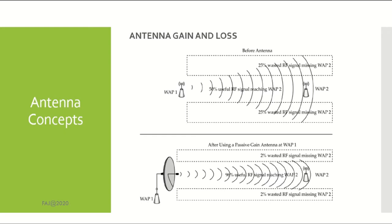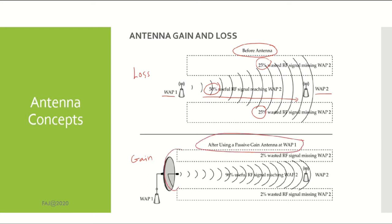Antenna gain and loss. This is an example of antenna loss and this is an example of antenna gain. Before using an antenna, wireless access point 1 tries to transmit an RF signal to wireless access point 2. You can see that only 50% of the useful RF signal reaches wireless access point 2, with 50% wasted during transmission. After using a passive gain antenna at wireless access point 1, 96% of the useful RF signal reaches wireless access point 2, with only 4% wasted during transmission.